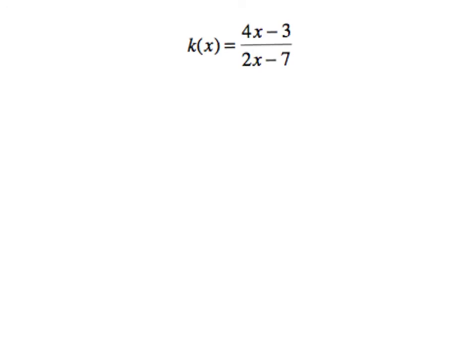Here's another case where the numerator and denominator have the same degree. In this case, they're both first degree. So we're going to take a look at those highest power terms, 4x and 2x. And if we divide those terms and divide their lead coefficients, 4 divided by 2 tells us the horizontal asymptote will be at y equals 2.